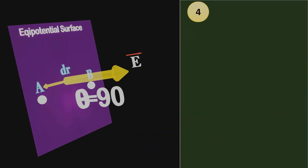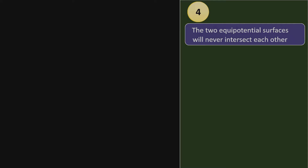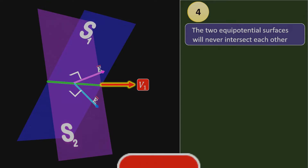The fourth property says that two equipotential surfaces will never intersect each other. Let's understand why. Let's assume that two equipotential surfaces S1 and S2 are intersecting. As we discussed in the previous property, the electric field is always perpendicular to the equipotential surface. If we observe at the intersection of both surfaces, the electric field has two different directions, which is impossible. Furthermore, at the intersection there should be two different potential values, V1 due to S1 and V2 due to S2. Having two potential values at one point is also impossible. This is the reason why two equipotential surfaces cannot intersect each other.